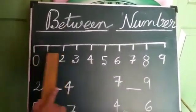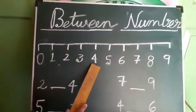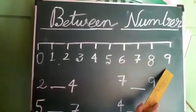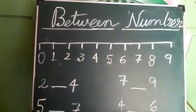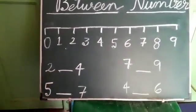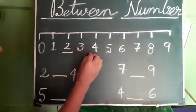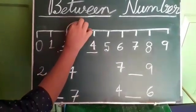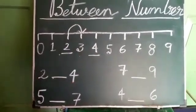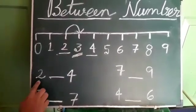Let's look at a number line here: 0, 1, 2, 3, 4, 5, 6, 7, 8, 9 — like this there is a number line. Can you tell me which number is in the middle of 2 and 4? Here is 2 and here is 4. Between 2 and 4, if you go by forward counting, we find 3. So 3 is the between number of 2 and 4. You will write here 3.